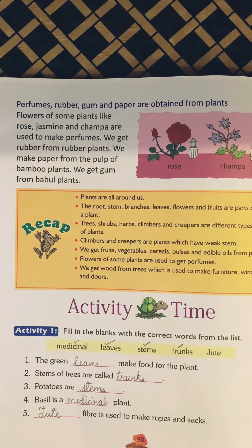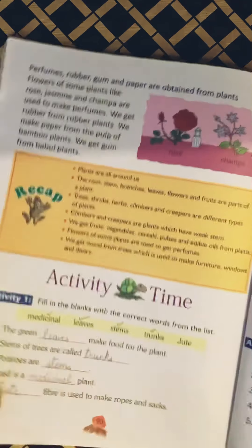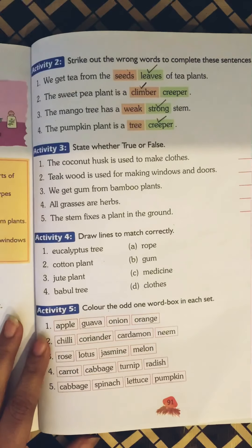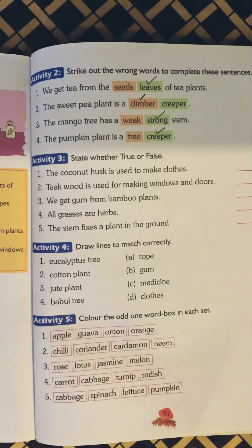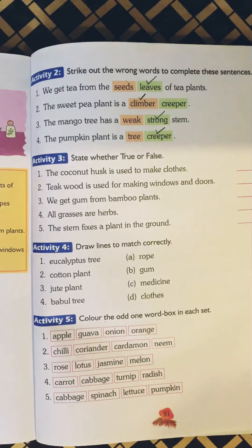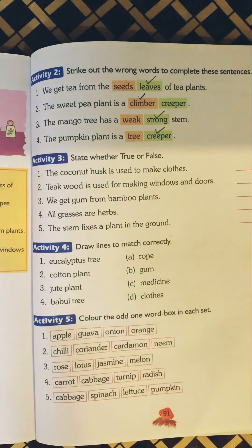Good morning class 2, take out your previous book, page number 91. Yesterday we had completed 2 activities of this chapter, types of plants. Today we will continue the activity, come to page number 91, activity number 3.